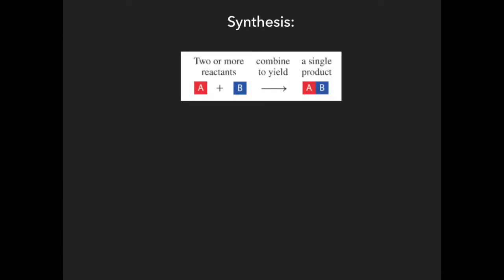There are five different types of reactions we're going to look at in this class. The first one is synthesis reactions. In a synthesis reaction, you have two different reactants — let's call them A and B — and they combine together to form one single product, AB.